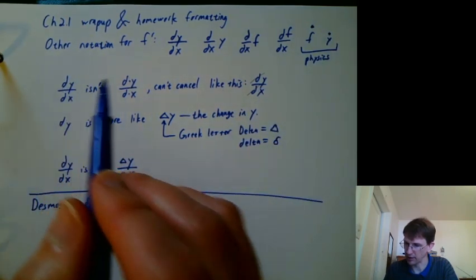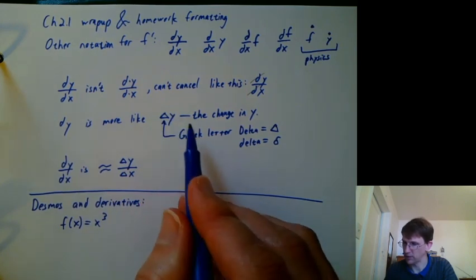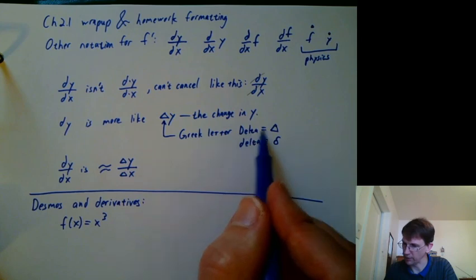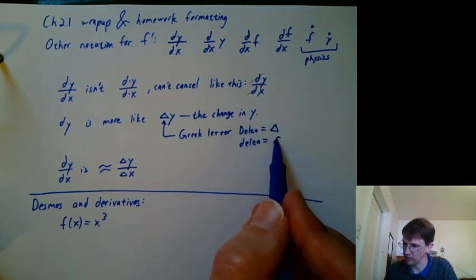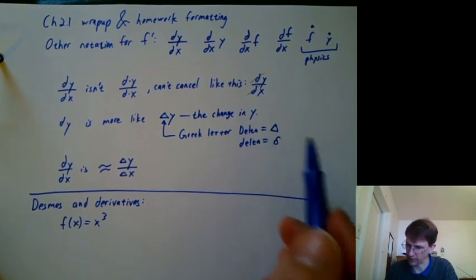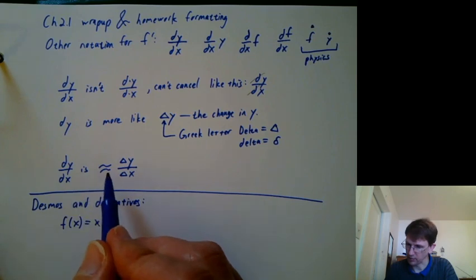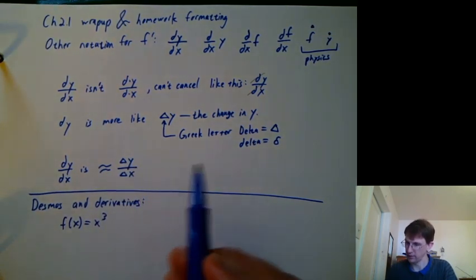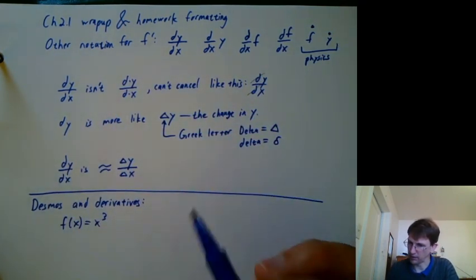So you really have to write it dy over dx. dy itself means something more like delta y, the change in y. The Greek letter delta, by the way, if it's a capital delta, it's this triangle. And if it's a lowercase delta, it's like an o with a little curly hat on it, or curly tail up above. You can think of dy over dx as basically the same thing as delta y over delta x, but there are some differences from a calculus point of view. So we'll be using dy over dx a lot more later.